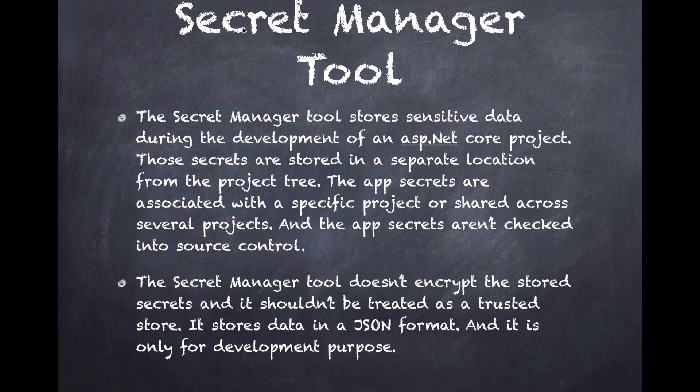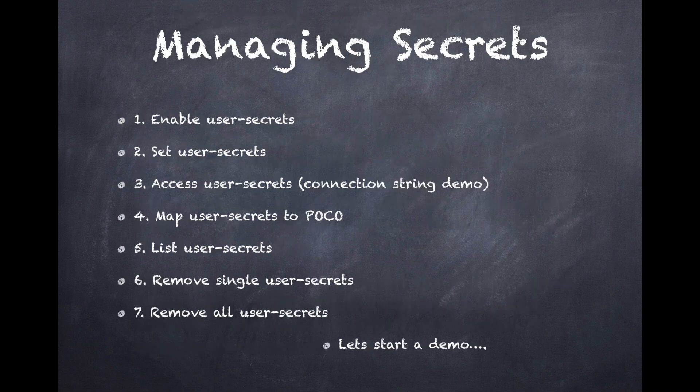In the case of production, we should not store application secrets or credential information in source code. We can manage them using environment variables, or we can also use Azure Vault provided by Microsoft Azure. .NET has also introduced the Secret Manager tool along with .NET Core, which we can use to manage application secrets during development. In this session we will learn how to enable, set, access, and list user secrets, map them to a plain old C# object, and remove them from the Secret Manager.